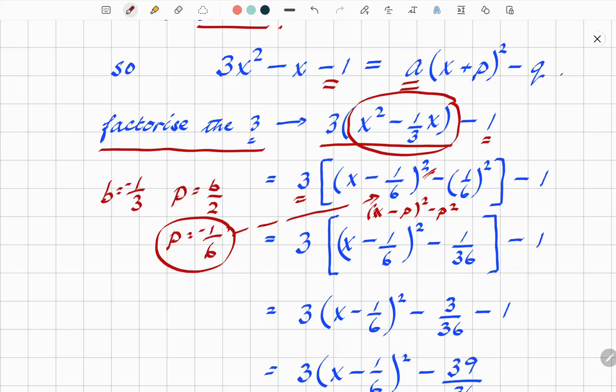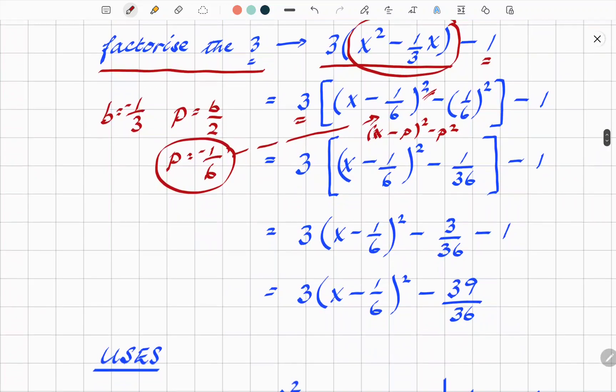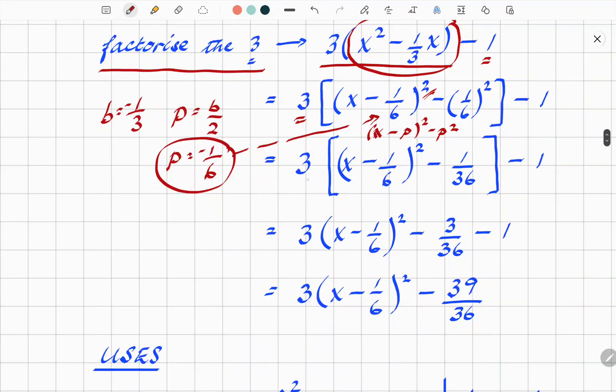So tidy up what's inside the square brackets. (x - 1/6)² - 1/36. Then we get rid of the square brackets by multiplying back in. So we have 3(x - 1/6)² - 3/36, and then the original -1 stays as it is.